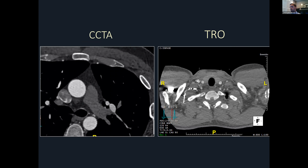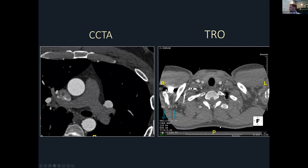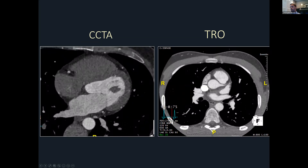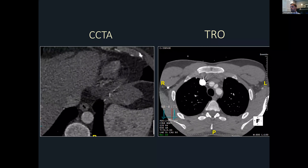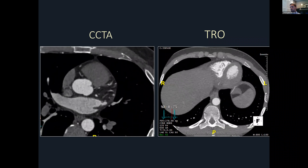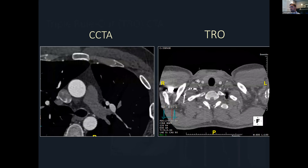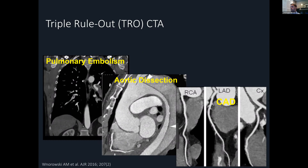Our document also compares conventional coronary CTA with the triple rule-out CTA, providing a framework for when triple rule-out CTA should even be considered. It's a modification of the coronary CTA protocol that extends the craniocaudal field of view and generally extends the contrast bolus for a higher volume of total IV contrast, to opacify both the pulmonary arteries as well as the aorta and the coronary arteries. This can be a very nice strategy to exclude pulmonary embolism, acute aortic syndrome, aortic dissection, and acute coronary syndrome — three life-threatening sources of chest pain.